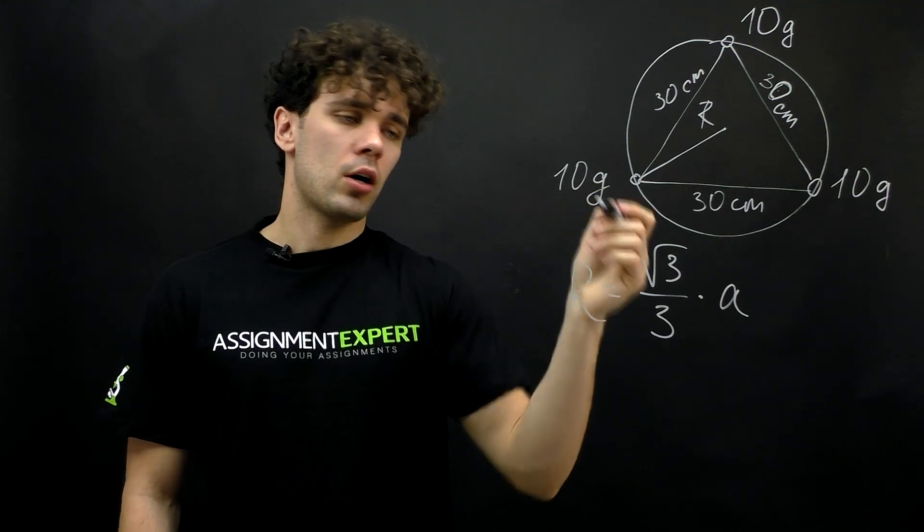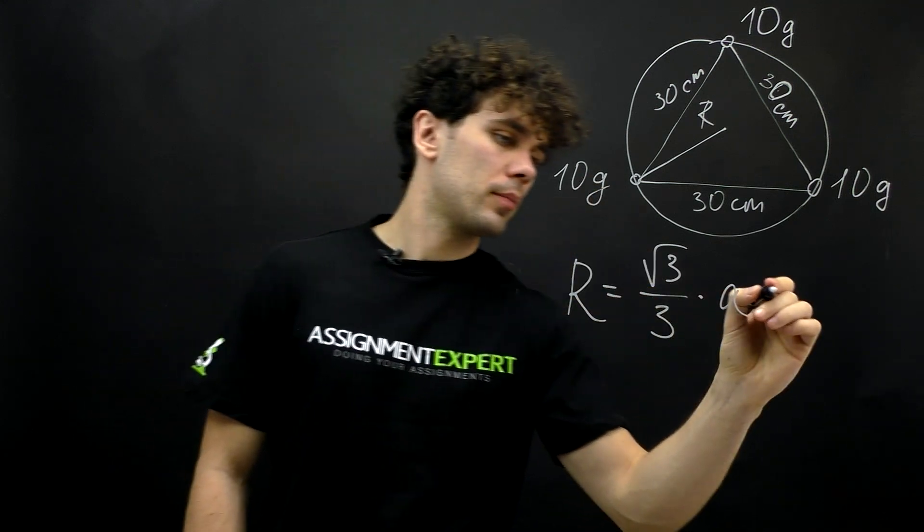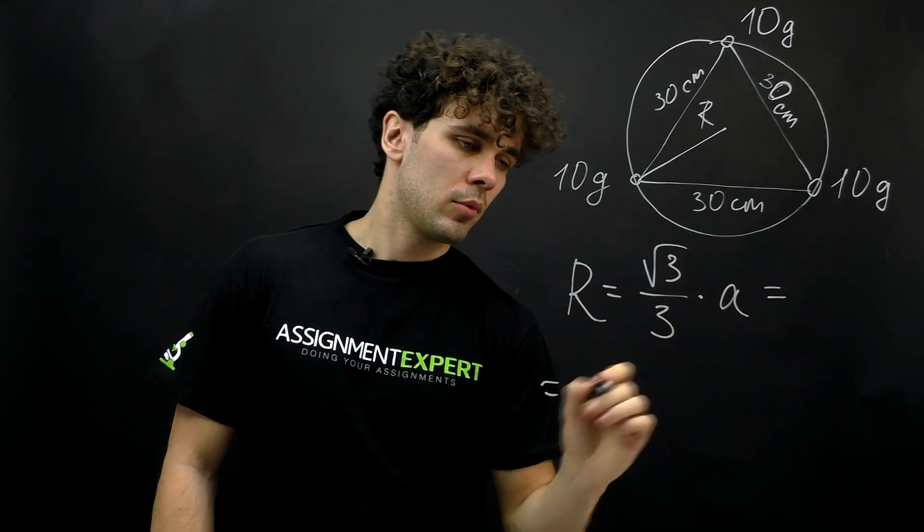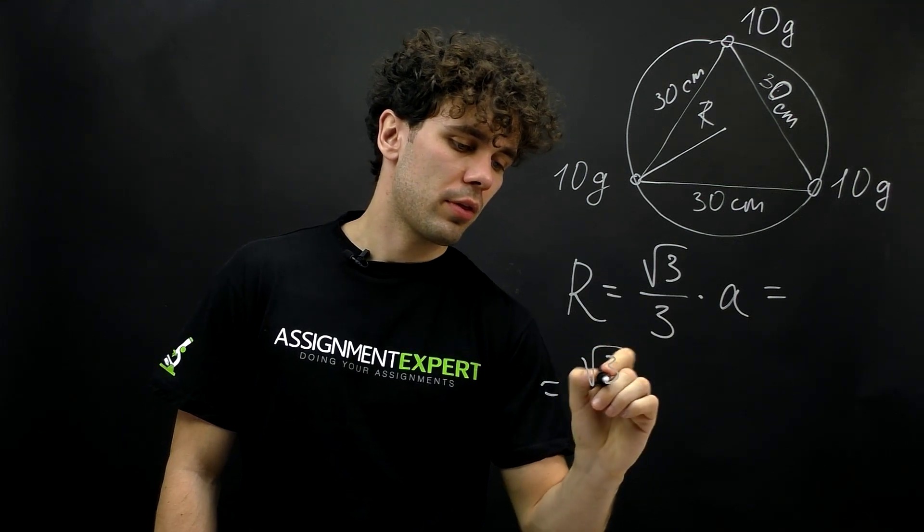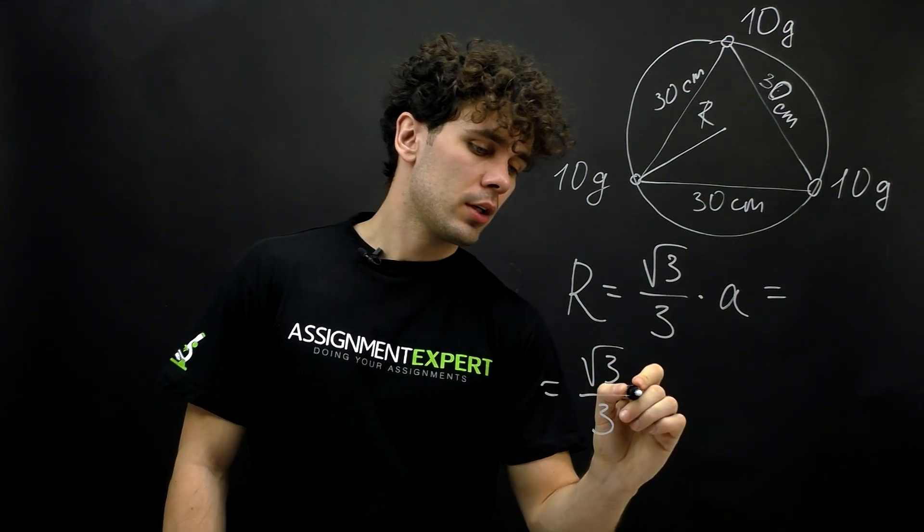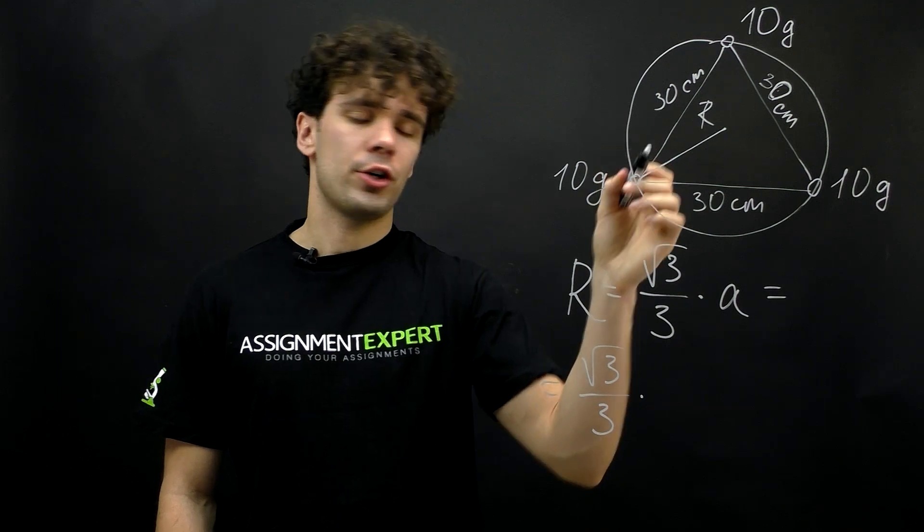Now let's put our values into this formula. We get the square root of 3 over 3 times a, which is 30 centimeters.